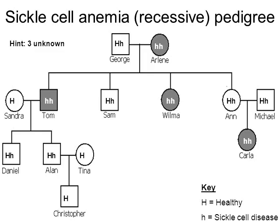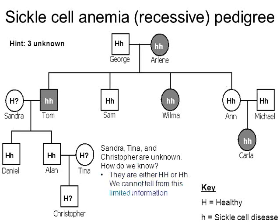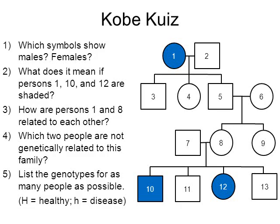Now there are only three people left, and the hint was that three people would be unknown. Sandra, Tina, and Christopher get question marks. All we know is that they're healthy, but we don't know which combination of healthy they are — homozygous dominant (HH) or heterozygous (Hh).